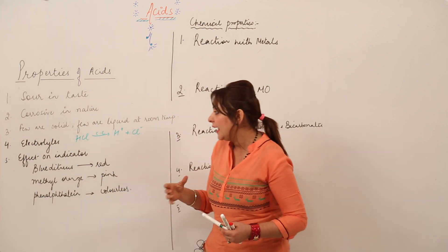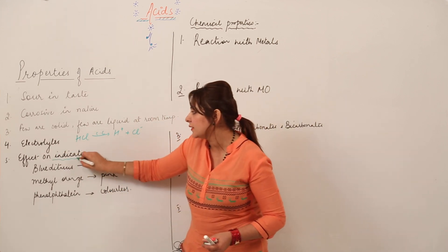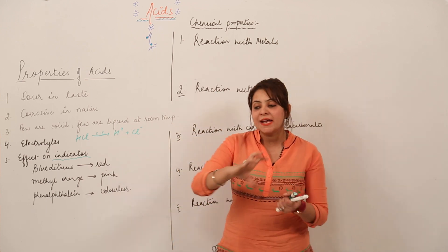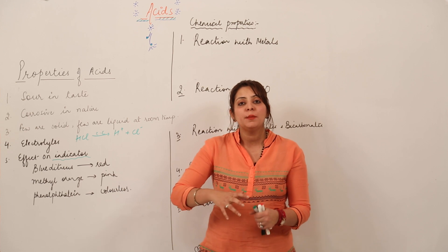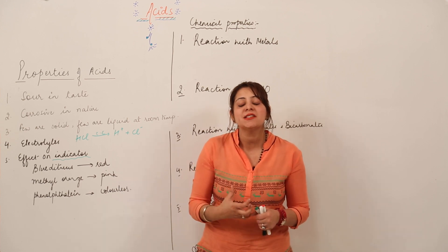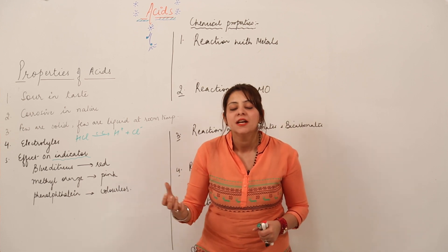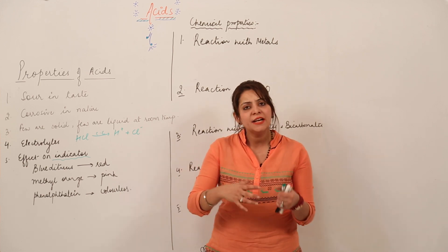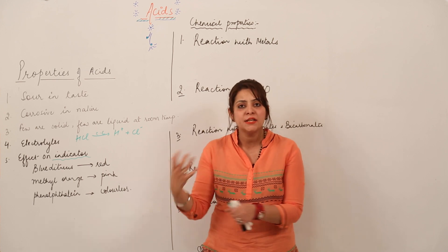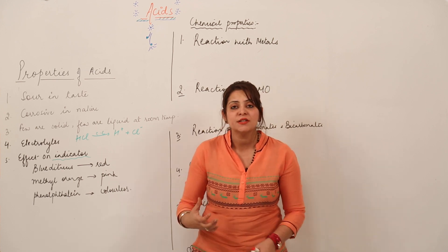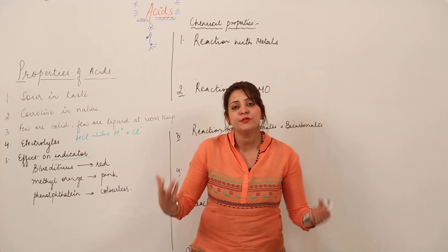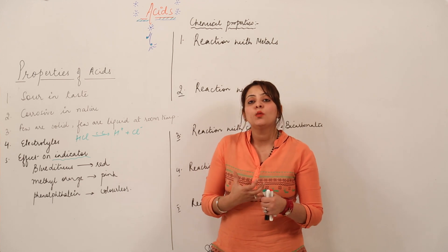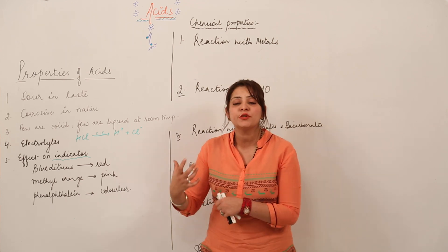Next, we have indicators. Indicators are chemicals which, when added to a substance, bring about a change in themselves, indicating the nature of the substance. We have many types of indicators — natural indicators, artificial indicators, and olfactory indicators — and we'll be discussing them in a separate topic.